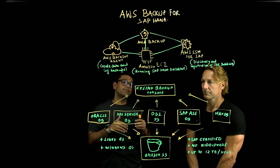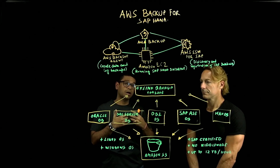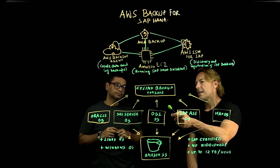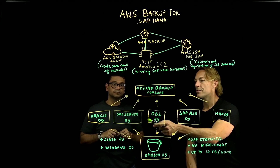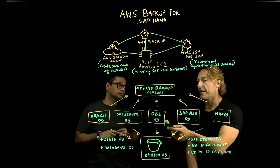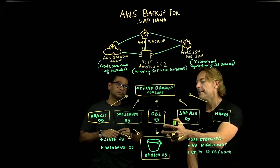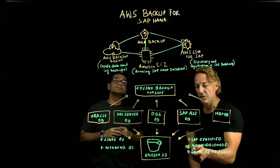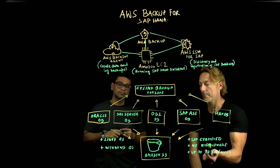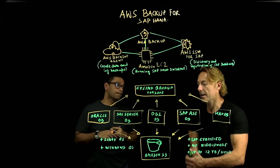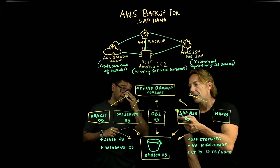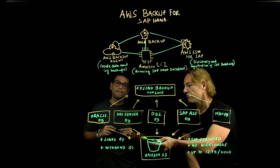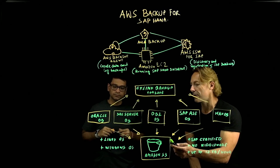I'll now ask Mario to explain the CX-Link backup solution for non-HANA databases. CX-Link backup covers the full suite of non-HANA databases, with the ability to back them up directly into Amazon S3. One of the key benefits is that the tool doesn't require middleware, just like AWS Backup for SAP HANA. The tool is also SAP certified where applicable, and it runs on both Linux OS and Windows OS.